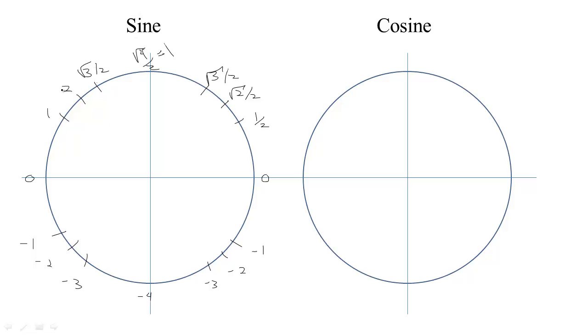Then back down, √3/2, √2/2. The square root of 1 is 1 over 2. The square root of 0 is 0 divided by 2 is still 0.